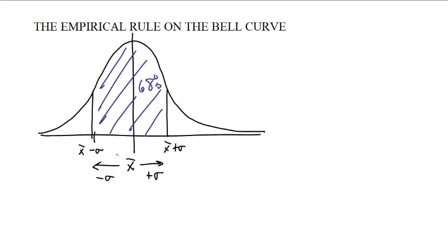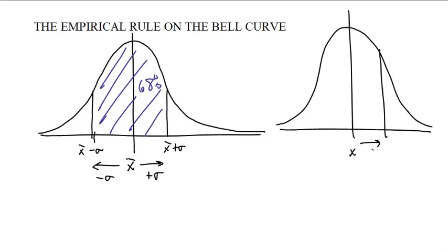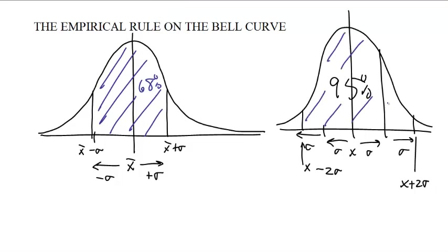So, we also know, by the empirical rule, that if we go not just plus or minus one sigma, but ahead another sigma to x plus two sigma, or we go back a sigma, and back a sigma to x minus two sigma, then what we have is 95% of all of the data is going to fit within there.